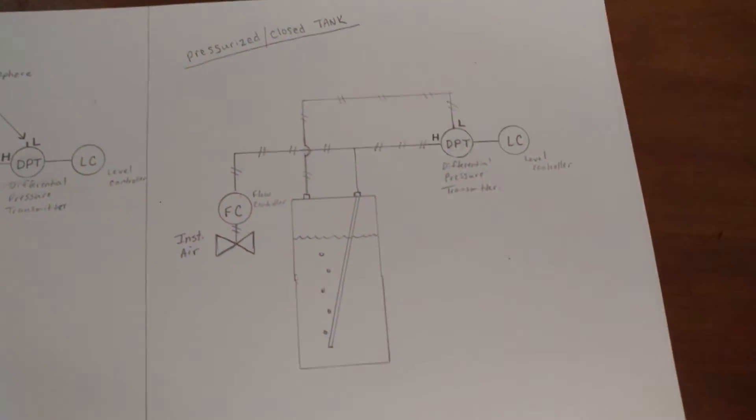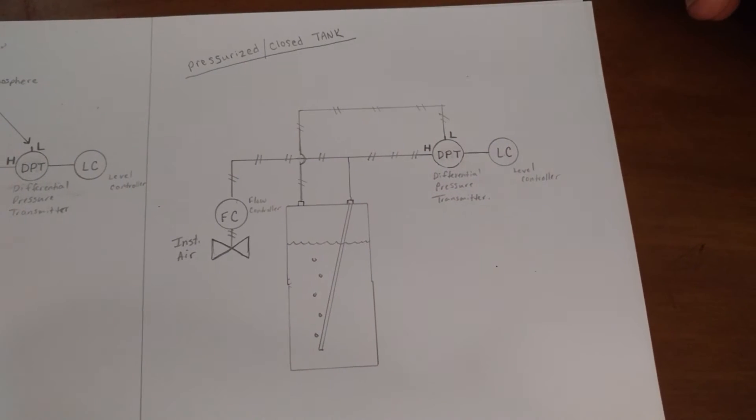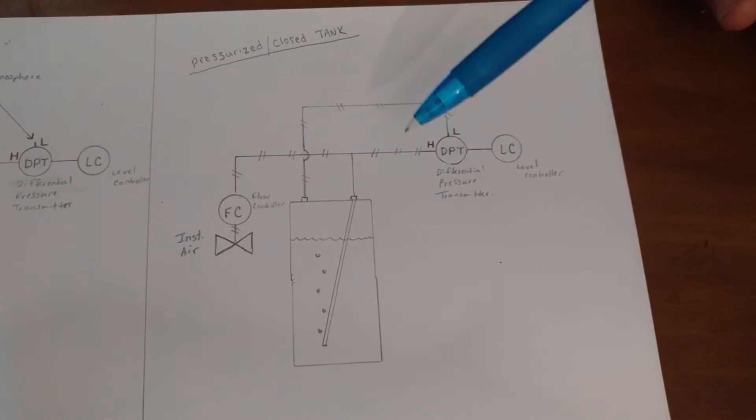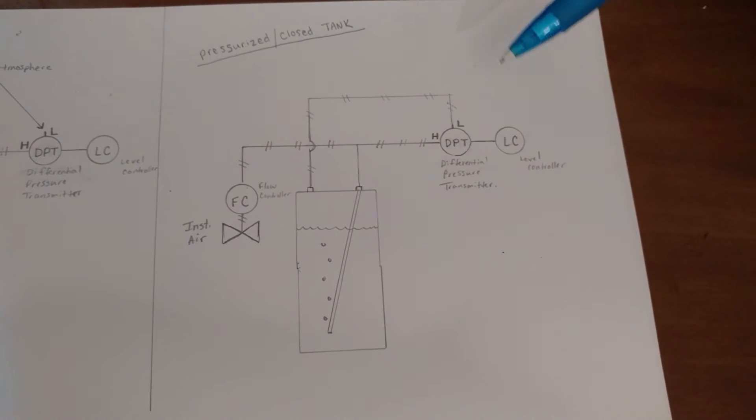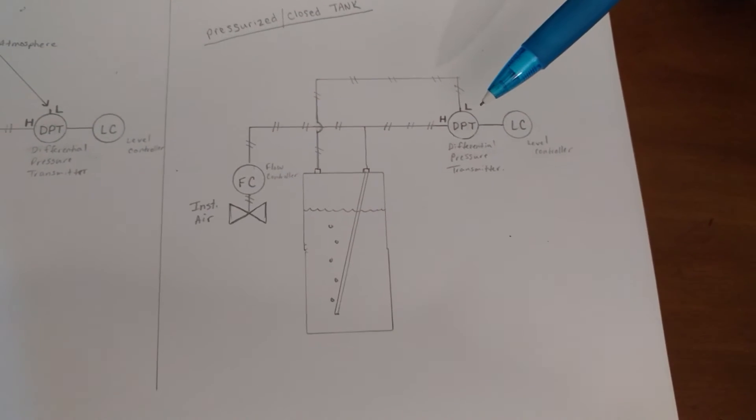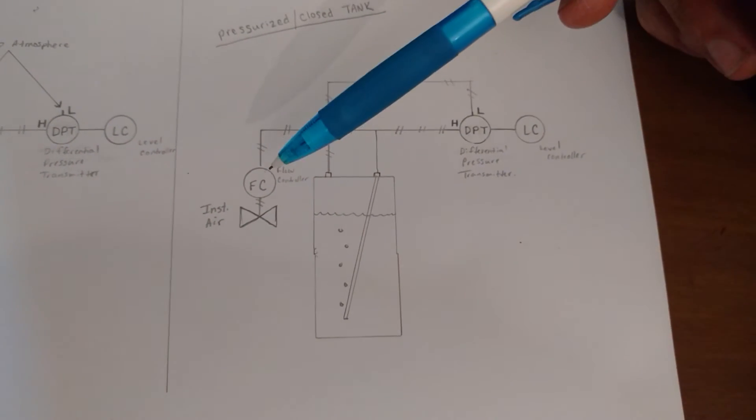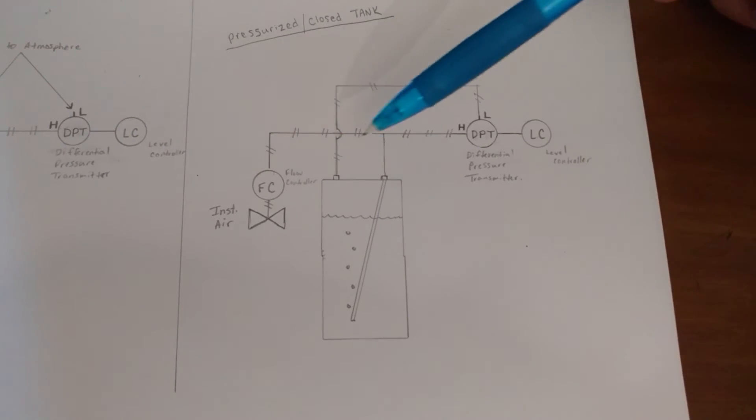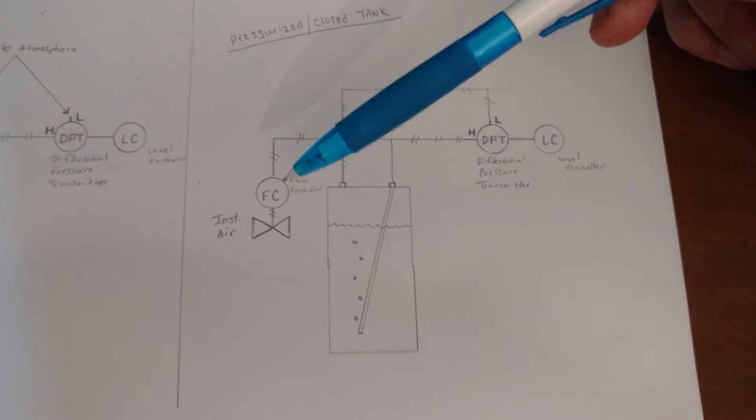It's important to know that in a closed or pressurized tank, you can also use your differential pressure transmitter and your bubbler. We control the air flow into the tank very accurately using our flow controller.